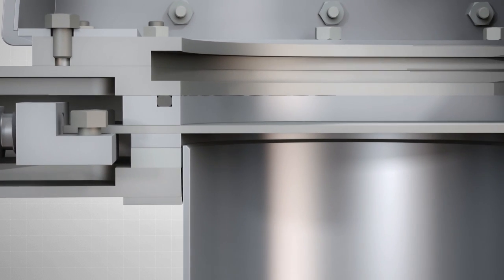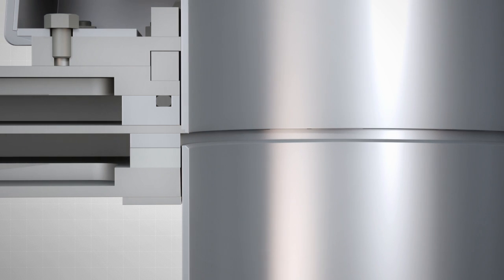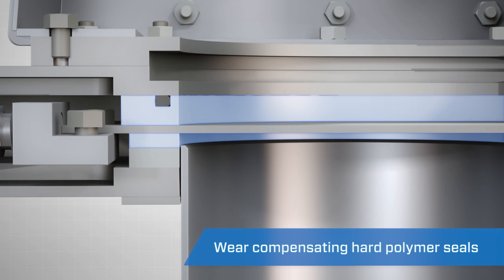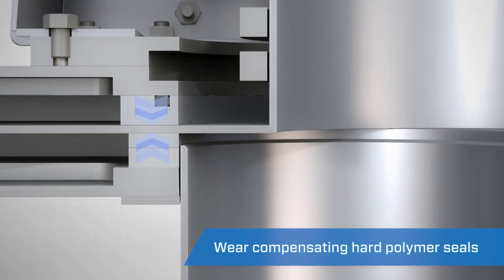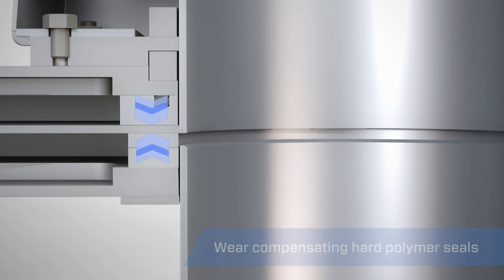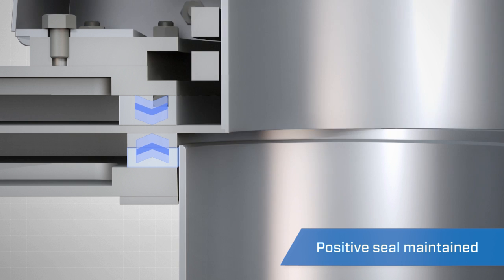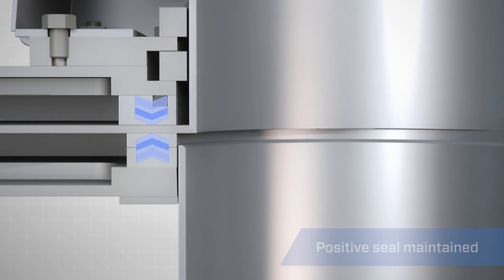Unlike inline flap diverters, the Vortex Flex Tube Diverter utilizes hard polymer seals that are shielded from the material flow. These wear-compensating hard polymer seals are continuously forced together by a compressed rubber backing, maintaining a positive seal even as the polymer slowly wears over time.